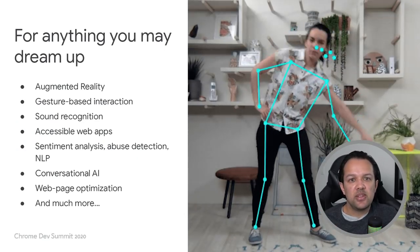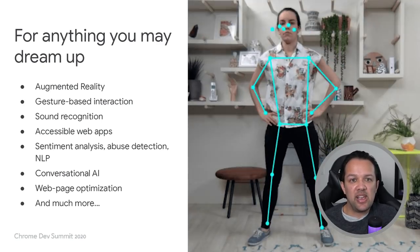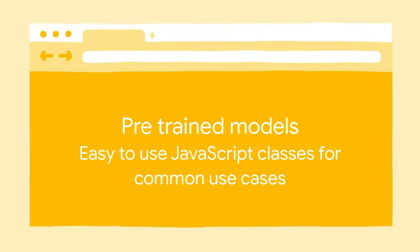You can use TensorFlow.js for anything you might dream up — things like sound recognition, gesture-based interaction, sentiment analysis, conversational AI, and much more. There are a few ways to use TensorFlow.js based on your familiarity with machine learning, JavaScript, or both. The first way is to use our pre-trained models — really easy to use JavaScript classes that can be used for many common use cases. There are many situations where we do not need to train a brand new model from scratch and can instead leverage existing work.